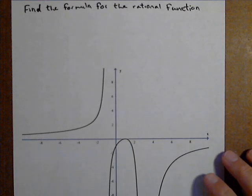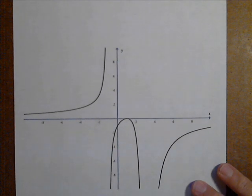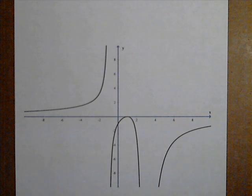This is another example of finding the formula for a rational function given a graph. So we have our graph here, and we want to attend to all the major components.